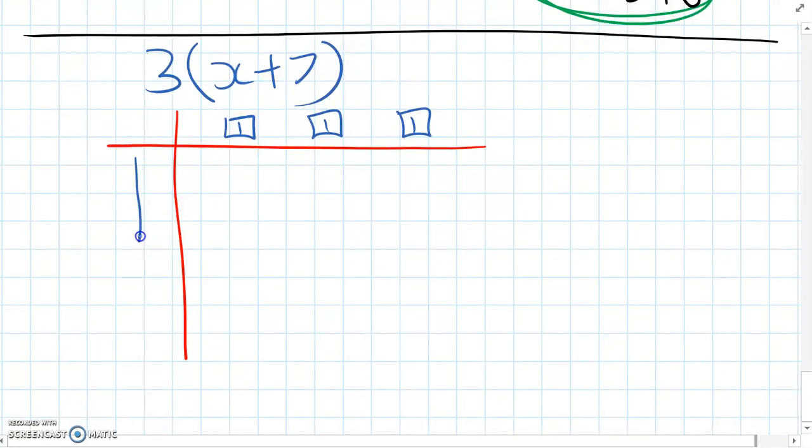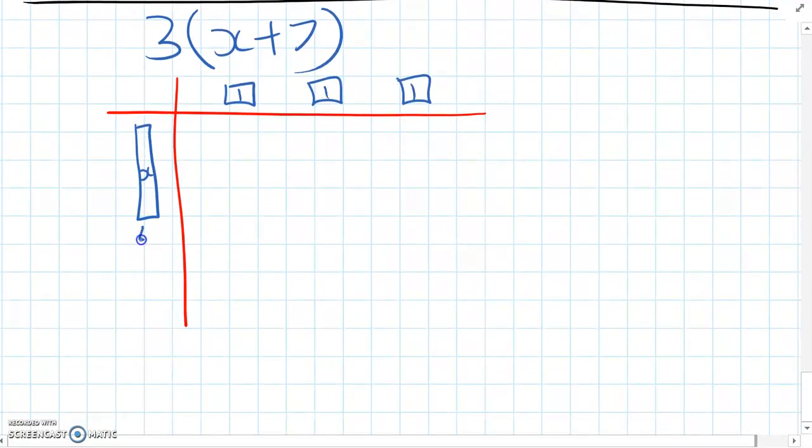Then we have x plus seven, so we're going to need an x, which is the long tile, and then seven small ones. Seven ones.